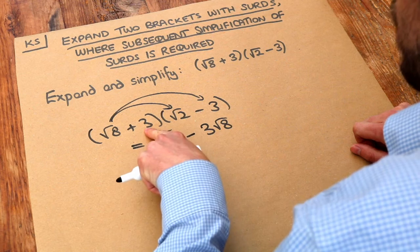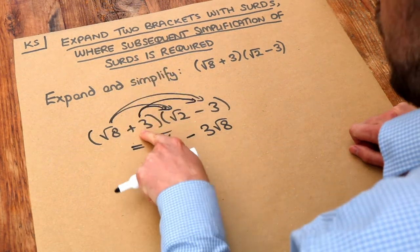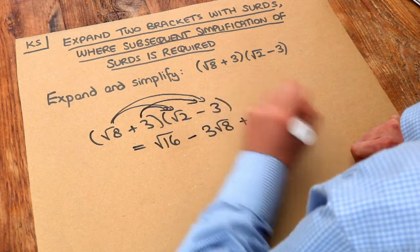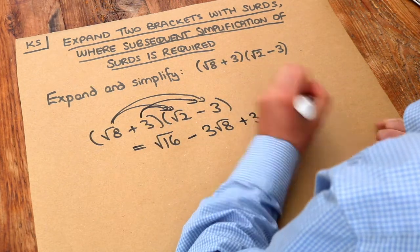And now we do this second thing in the first bracket, the plus 3 multiplied by each thing in the second bracket. So we've got the 3 times the root 2 is just positive 3 root 2. And we've got 3 times minus 3 which is negative 9.